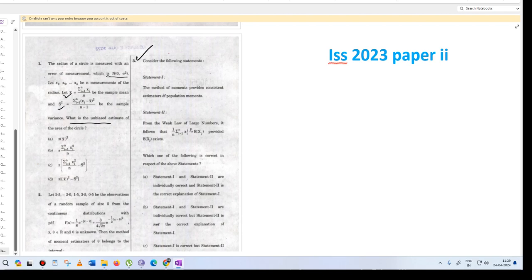The statement is: the method of moments provides consistent estimator of population moments from the weak law of large numbers. Which of the following statement is correct in the above statement? The method of moments is consistent because the method of moments provides a consistent estimator, this is actually a true statement.